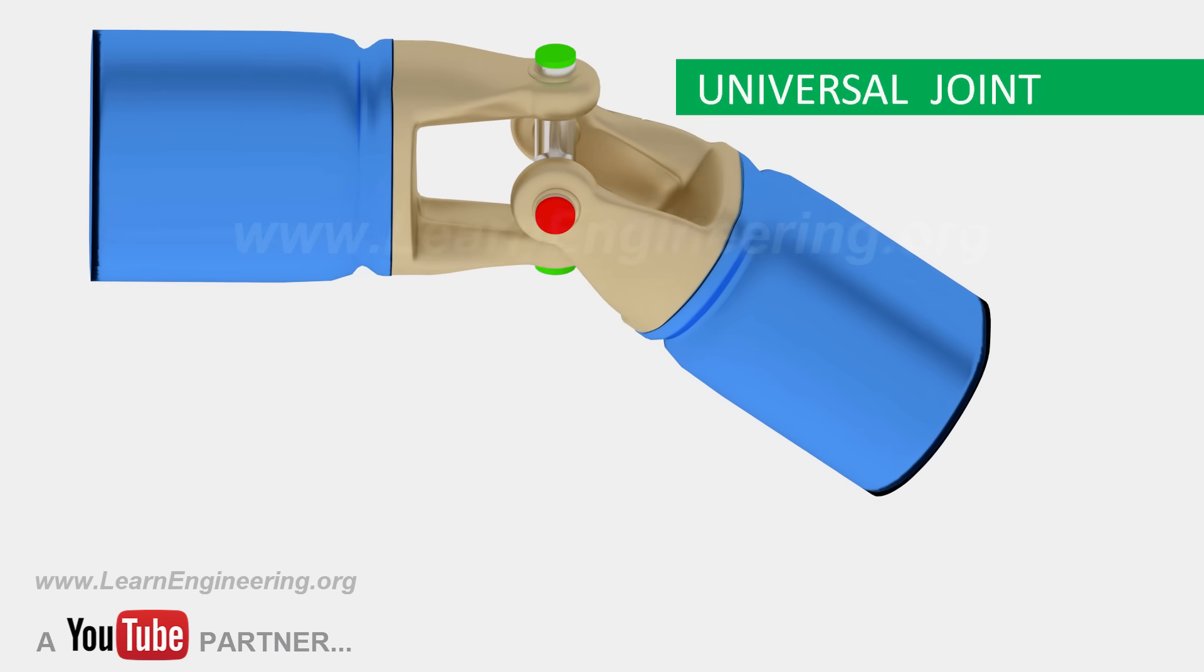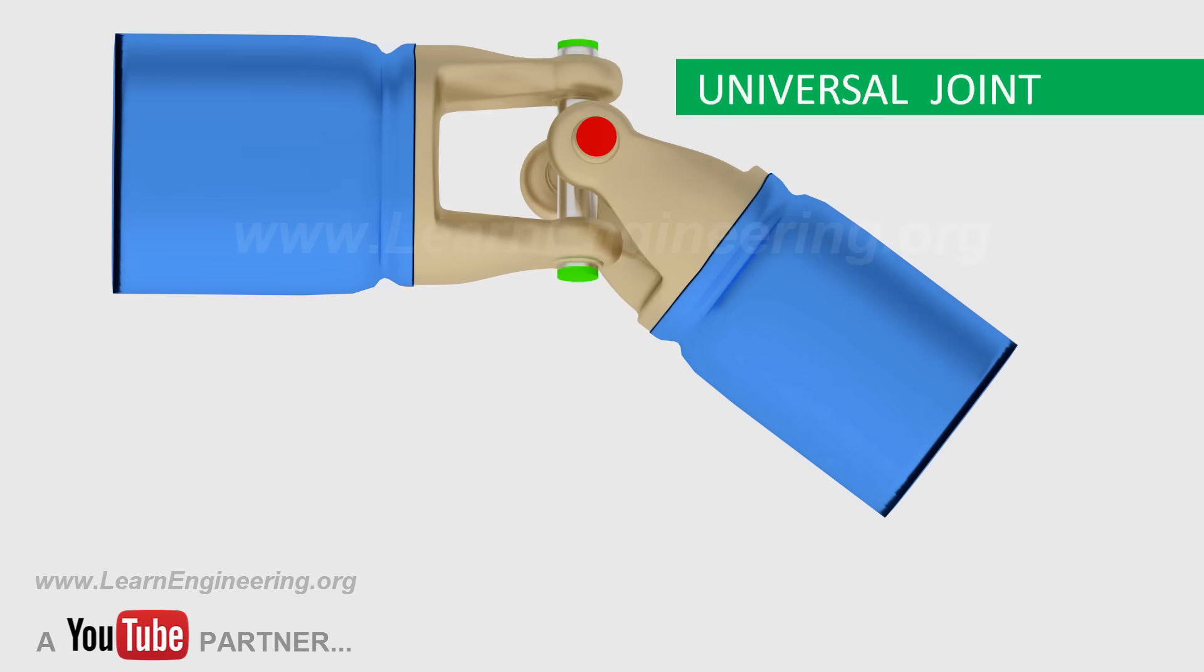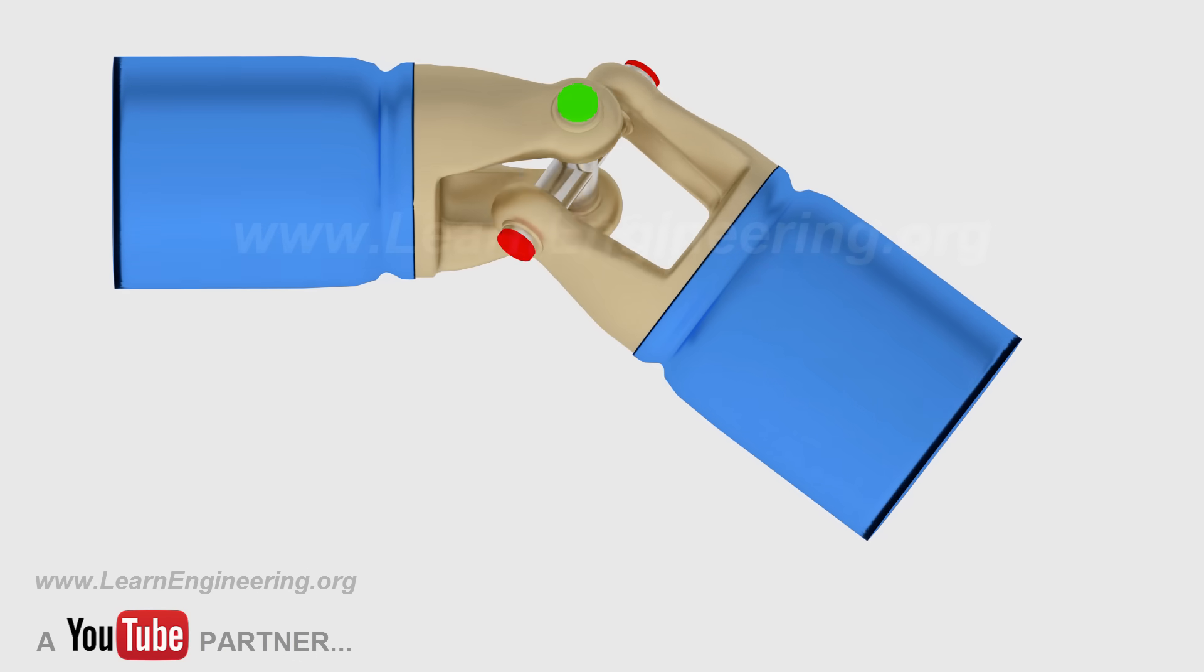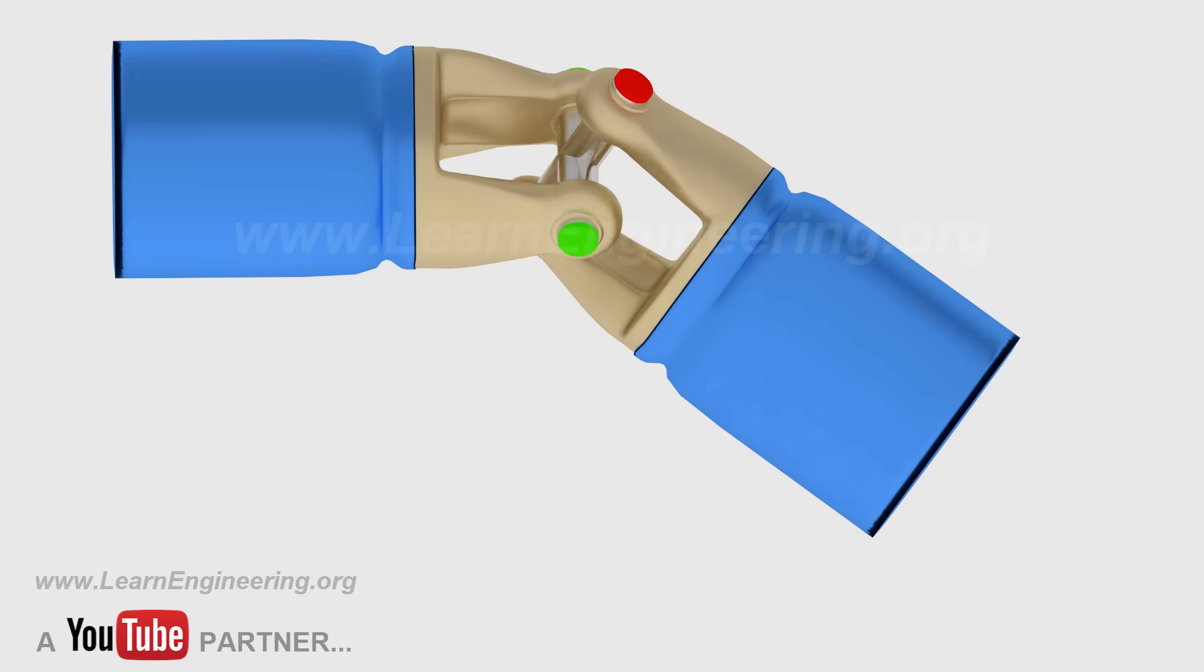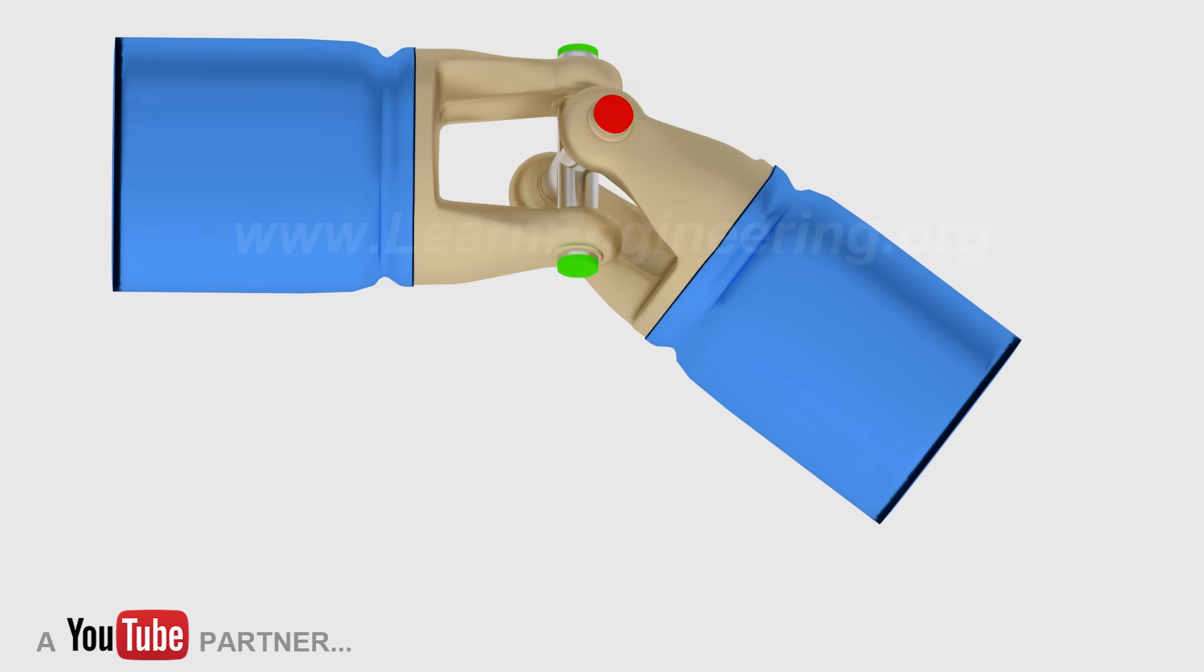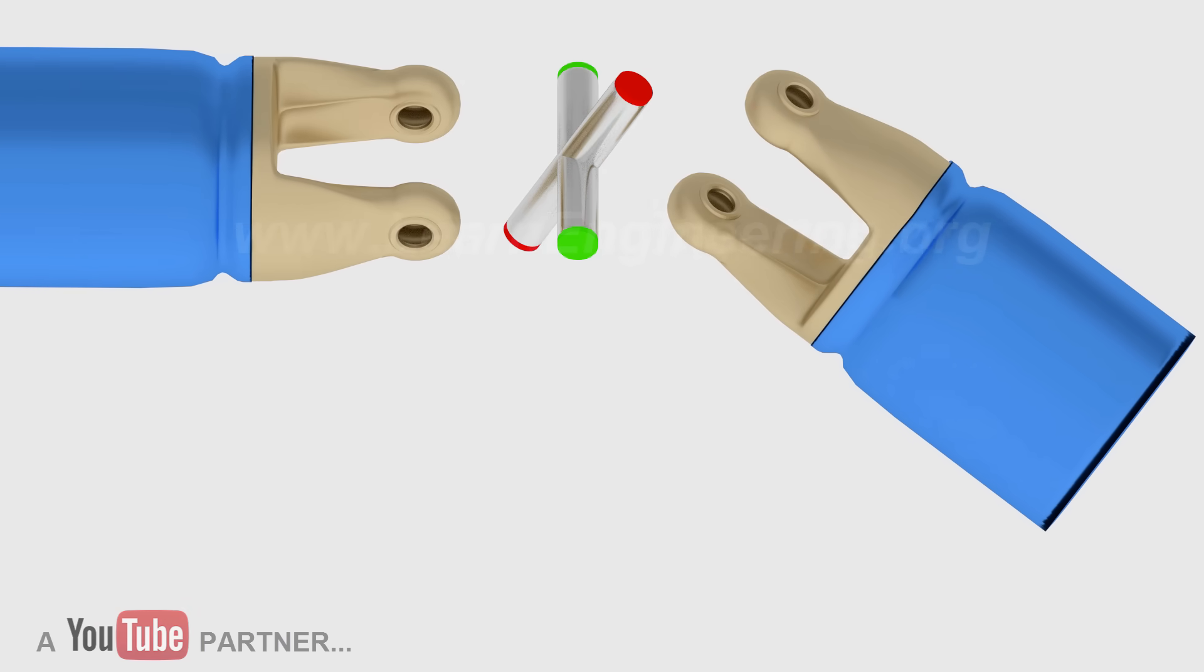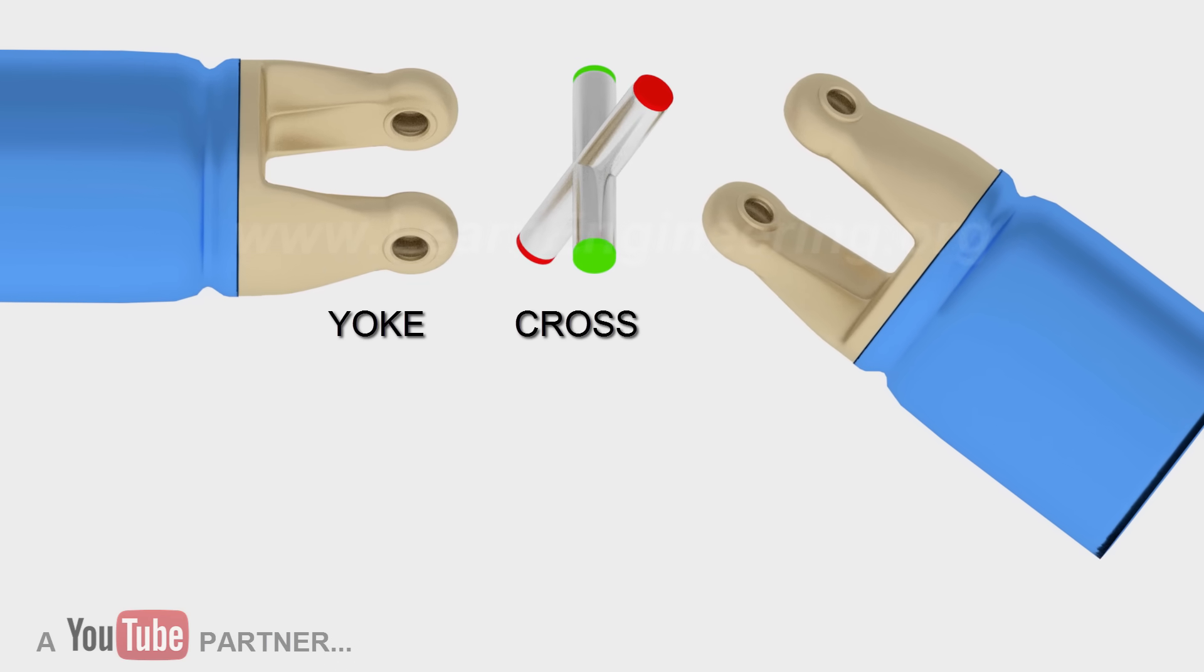Even though the Universal Joint's mechanism seems simple, the physics behind this mechanism are rather complicated and interesting. The Universal Joint has three basic parts: two yokes and a cross.